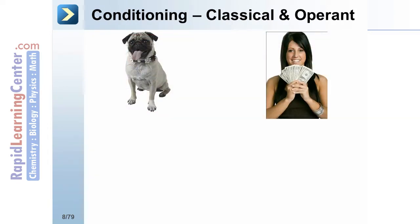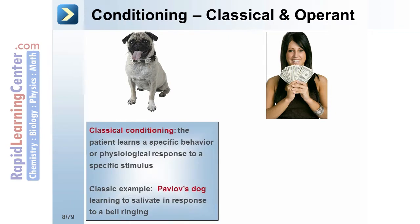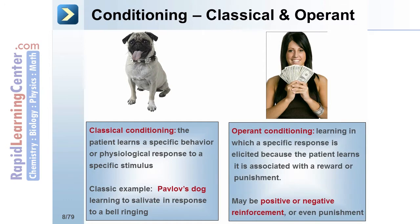Psychology is the study of human behaviors. A widely studied type of behavior is conditioning, which is a type of associative learning. Two types of conditioning are classical conditioning, in which the patient learns a specific behavior or physiological response to a specific stimulus — the classic example being Pavlov's dog learning to salivate in response to a bell ringing. The second type is operant conditioning, where a specific response is elicited because the patient learns it is associated with a reward or punishment.